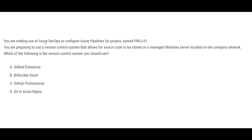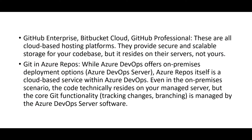The next question: you are configuring Azure DevOps pipelines for a project using a machine control system. The source code should reside in a managed Windows server located on a company network. None of these options would really fit the bill because options like GitHub Enterprise, Bitbucket Cloud, or GitHub — these are all cloud-based hosting platforms. They provide secure and scalable storage of your code base but it resides on their servers, not your servers.